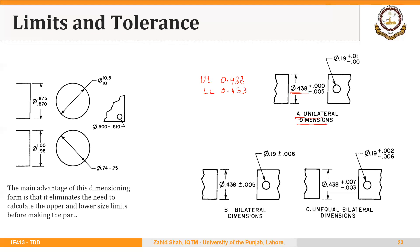On the right side, this hole has a basic size of 0.19. The upper limit is plus 0.01 and the lower limit is 0.00. So we can make this hole maximum to a size of 0.20 and on the lower side equal to 0.19. So this is the upper limit of size and this is the lower limit of size.